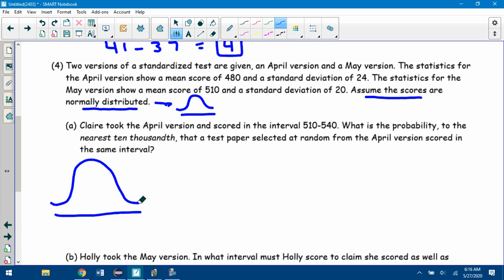Claire took the April version and scored between 510 and 540. What is the probability to the nearest ten-thousandth that a test paper selected at random from the April version scored in the same interval? They do say assume the scores are normally distributed. Remember when you see that, you should go back to this normal curve stuff. So we're talking about just the April version here. So you draw your normal curve. In the April version you've got a mean of 480. Where does that go? Right in the middle. And a standard deviation of 24. We want to know what's the probability you could score between 510 and 540. 510 would be up here, maybe 540 is over here. I want to be between here. Do you need z-scores for this? No.